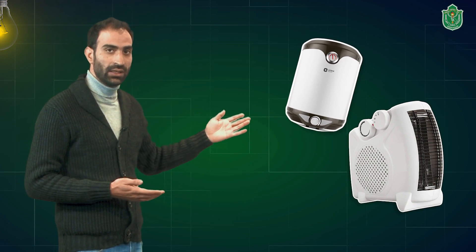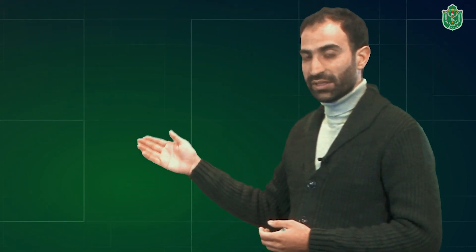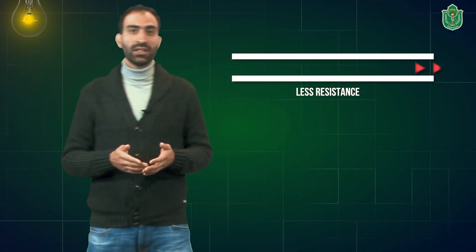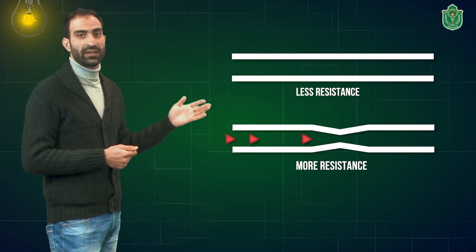One of the most spectacular effects of electric current is its conversion into heat. You might have wondered that whenever you switch on an electric heater or an electric geyser, in a few moments the water starts boiling and the heater starts to blow hot air. How does this happen? Whenever electric current passes through a material, every material has a tendency to offer some resistance or hindrance to the flow of electric current.